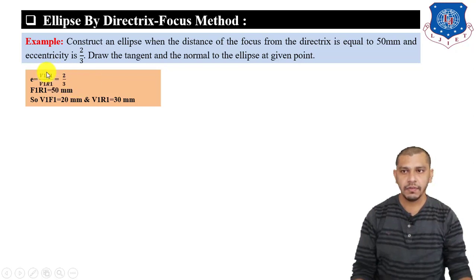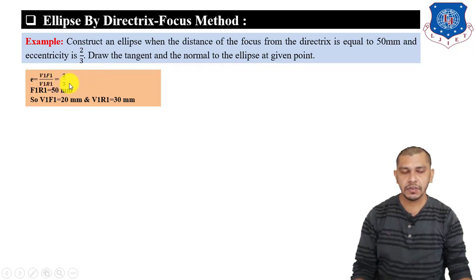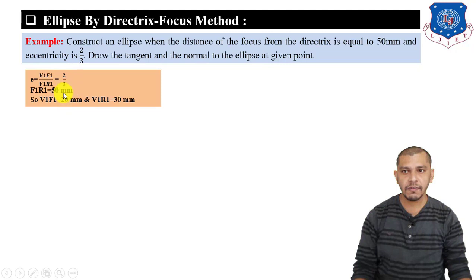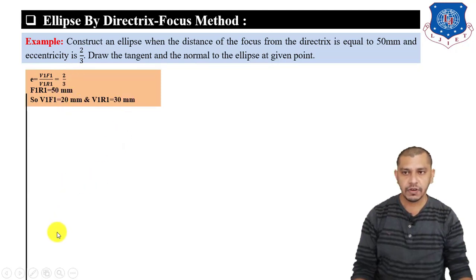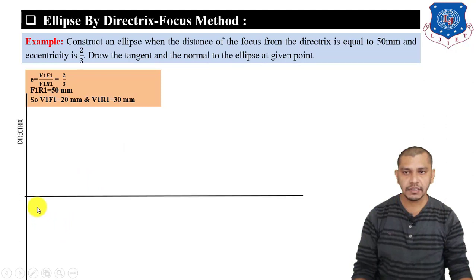From the division, V1 to F1 equals 2 units = 20 mm, and V1 to R1 equals 3 units = 30 mm. Similarly, V2F = 20 mm and V2R = 30 mm. Now first of all, draw the directrix and conic axis.